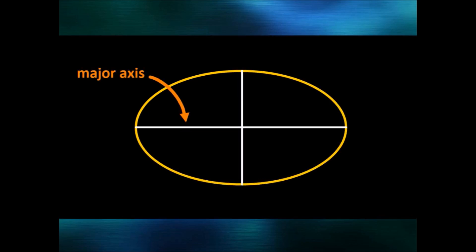Here is another diagram of an ellipse. I've drawn on two straight lines which cross at its geometric centre. The longer line is called the major axis of the ellipse, which is the longest line you can draw between any two points on the outline that goes through the centre.